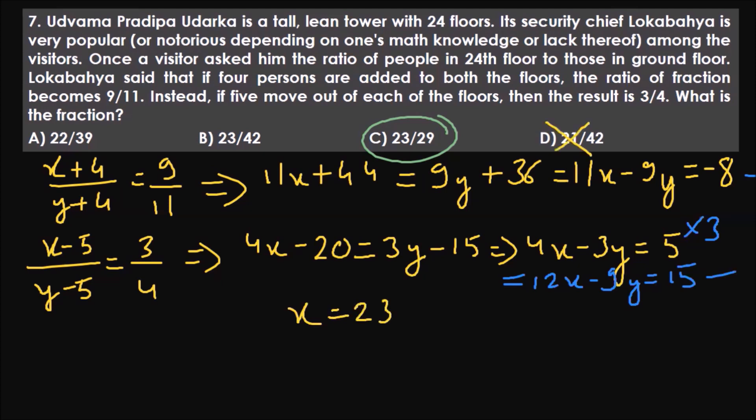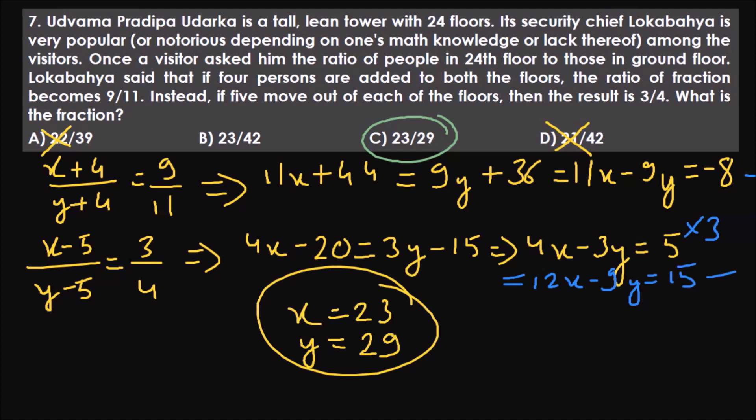So x equals 23, which rules out options D and A. Substituting back into one of the equations gives y equals 29. So the answer is 23 by 29. This question is slightly time-consuming, but not tough — just simple algebra. Let's move on.